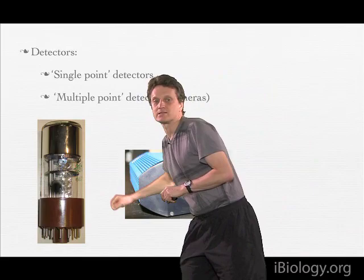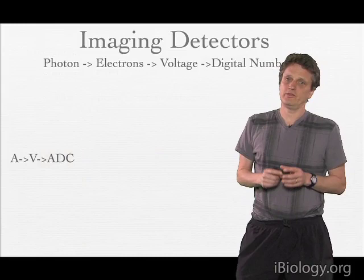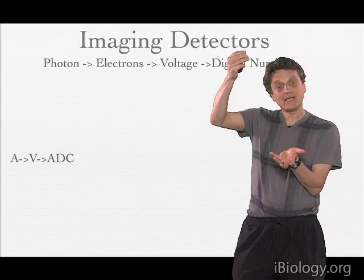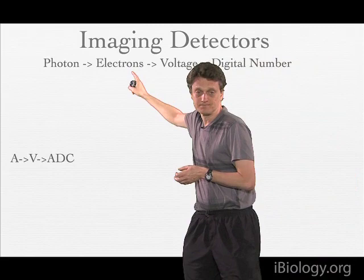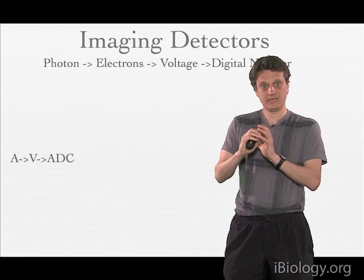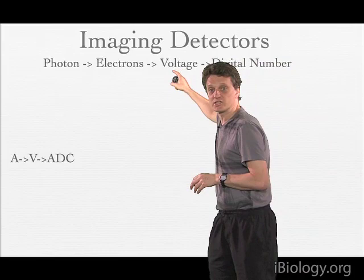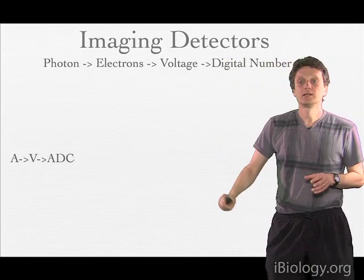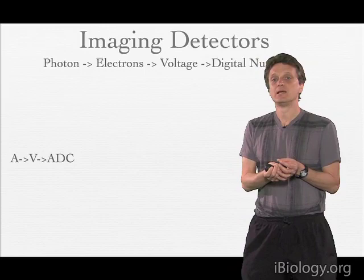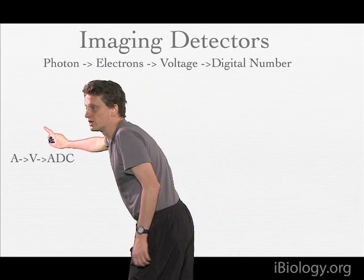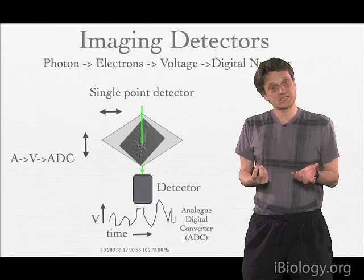Here you see an example of a single point detector — this photomultiplier tube — and here is a camera. All these types of detectors share the same principle: they take in light in the form of photons and convert that into electrons through the photoelectric effect. The number of electrons is converted into a voltage, which is then converted into a digital number that is transported into the computer to build up the image. There is always the sequence: charge to voltage to digital number.